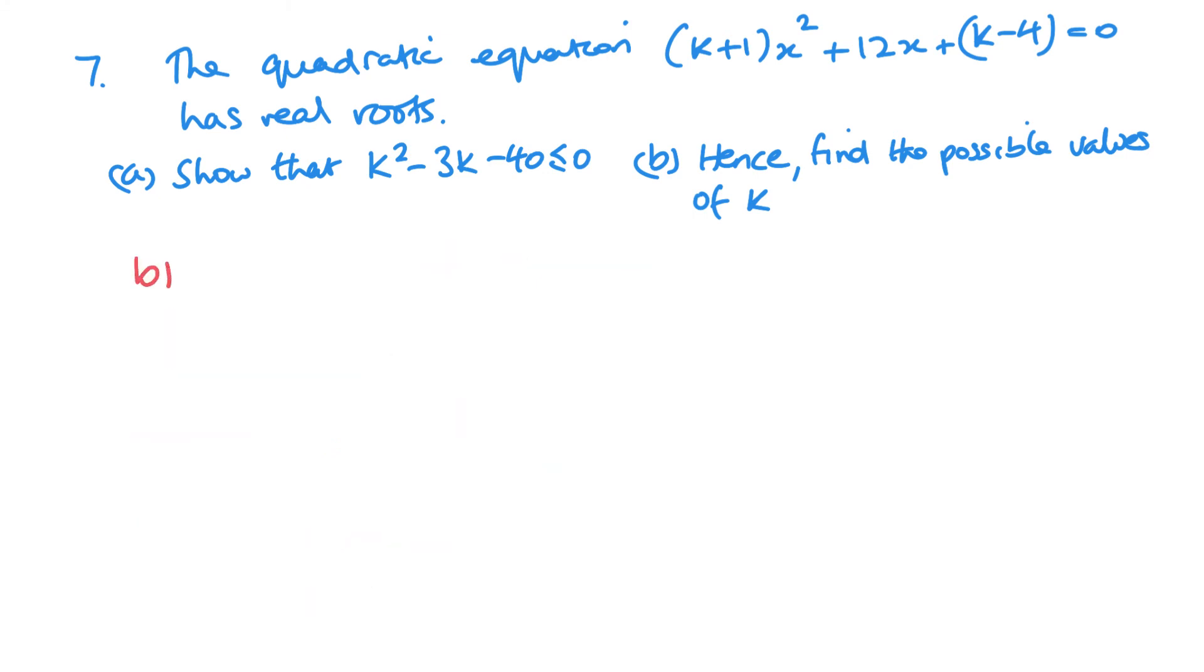And then, finally, part B. Hence, find the possible values of K. So this is now just about solving this equation. So we've got K squared minus 3K minus 40. Now, initially, I'm just going to look at equal to 0 to find my critical values. So, it looks like it's going to factorize. And, yeah, 5 and 8 will give me the 40 and that way around. So K equals minus 5 and K equals 8 are my critical values.